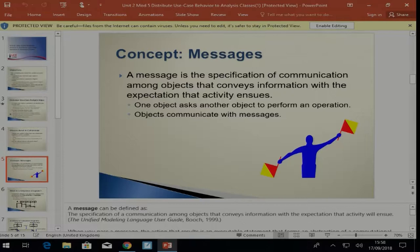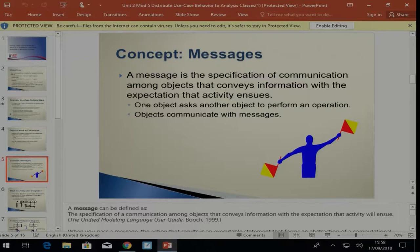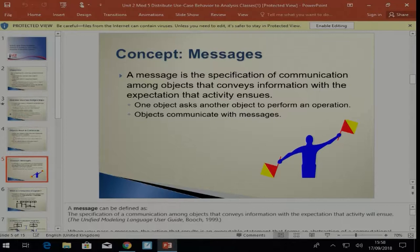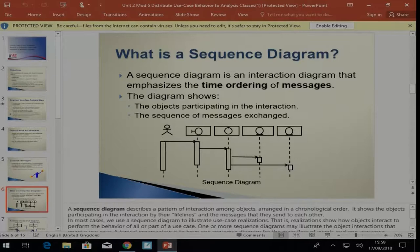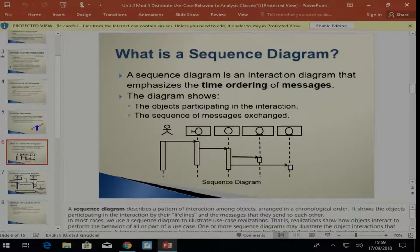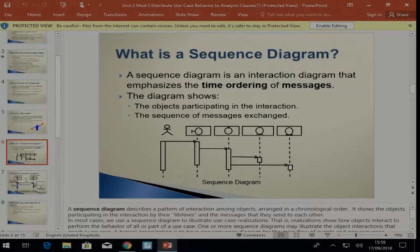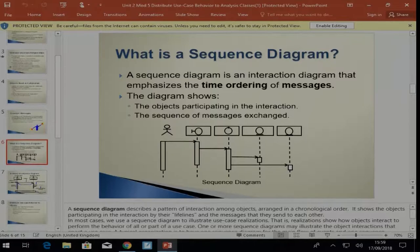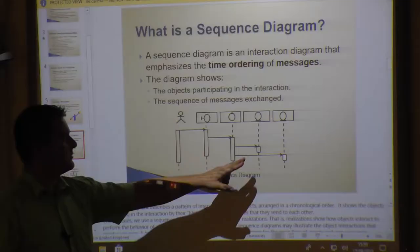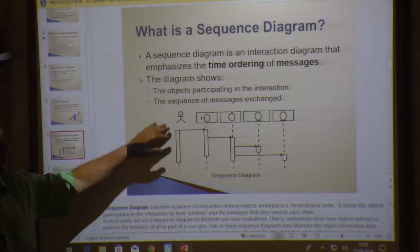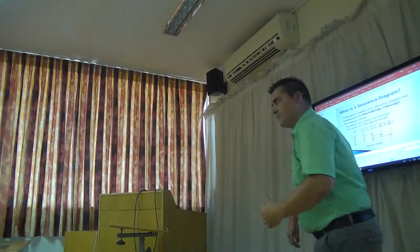A message is the specification of communication among objects that conveys information with the expectation that some activity is going to happen. One object asks the other object to perform an operation. Objects communicate with messages. So we are getting to a place of creating a sequence diagram. What is a sequence diagram? It's really a timing diagram that shows us who's doing what when.